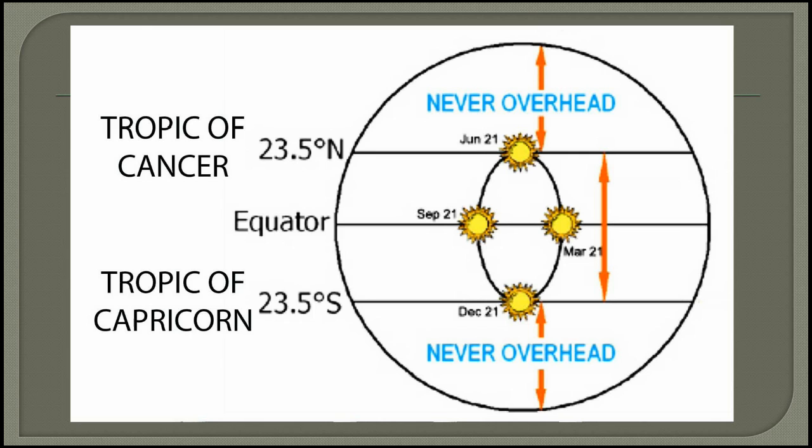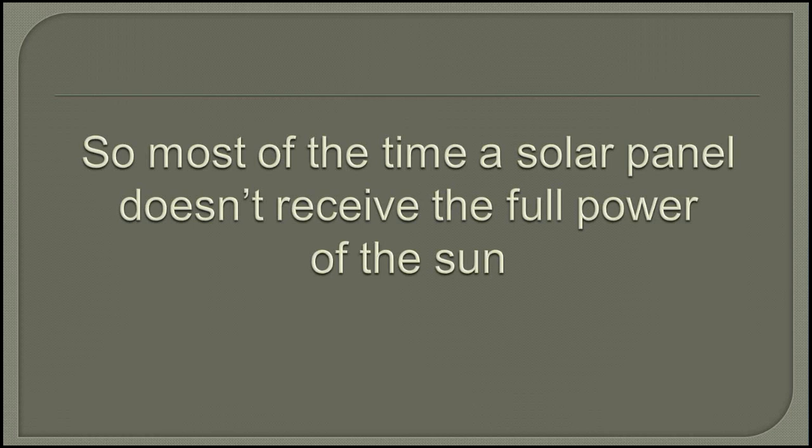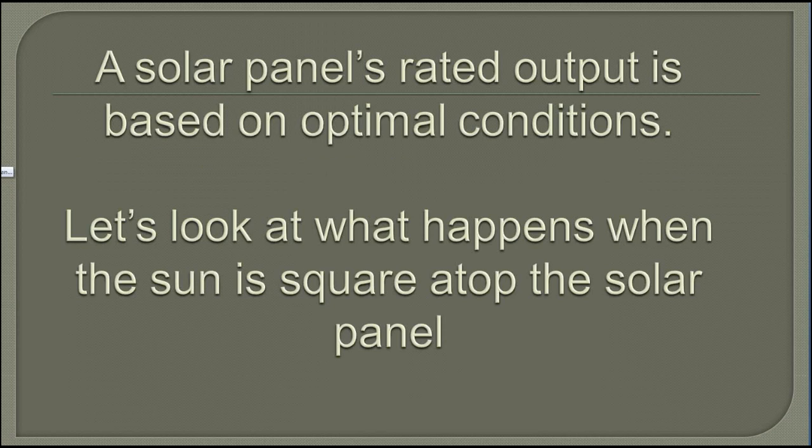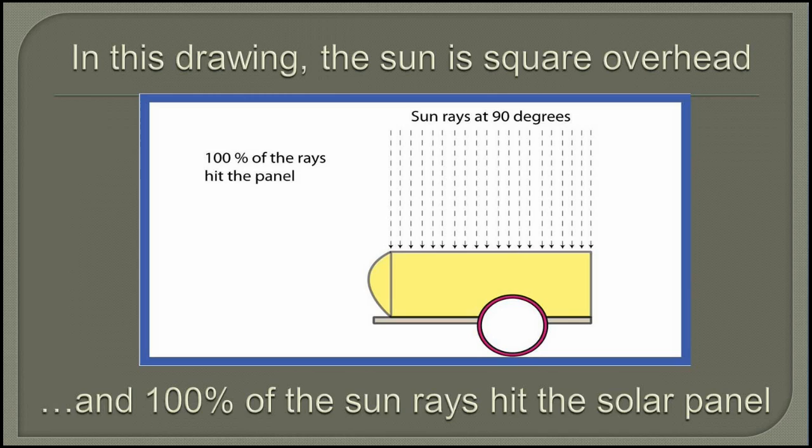So most of the time, a solar panel doesn't receive the full power of the sun. A solar panel's rated output is based on optimal conditions. Let's look at what happens when the sun is square atop the solar panel. In this drawing, the sun is square overhead and 100% of the sun's rays hit the solar panel.